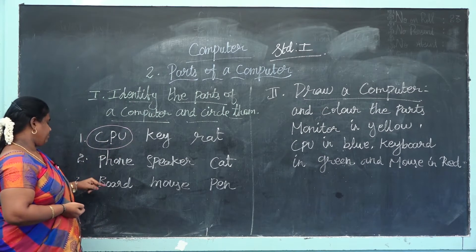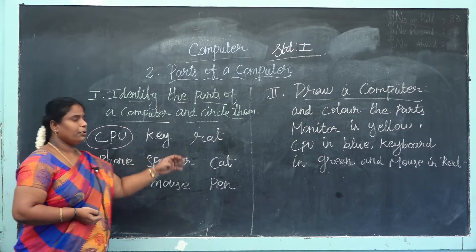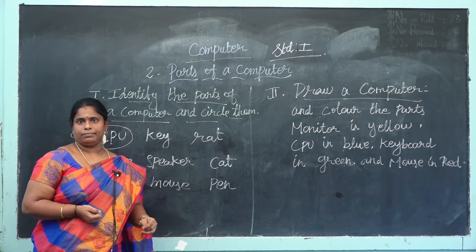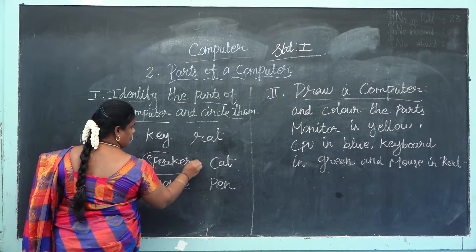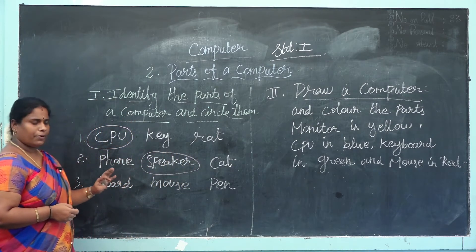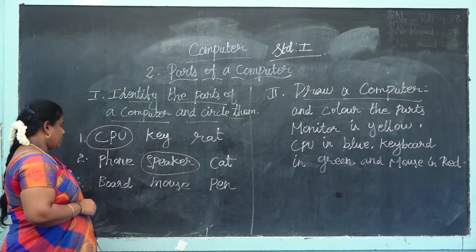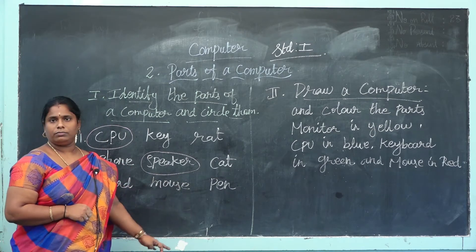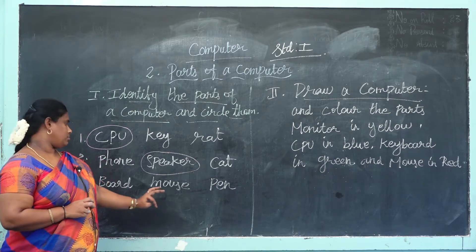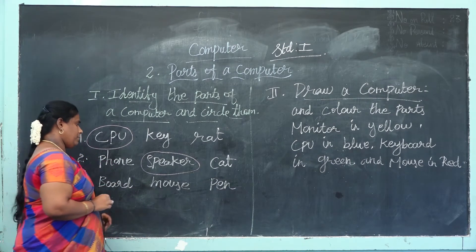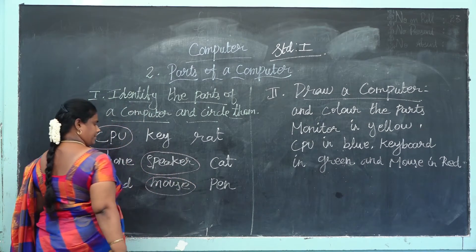What is the next one? Phone, speaker, cad. Which one is a computer part? The correct answer — speaker is an additional part of the computer. Next one: board, mouse, pen. Which one is the computer part? Yes — mouse! Mouse is the computer part. Mouse is an input device.